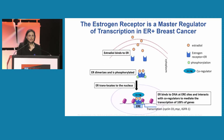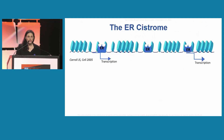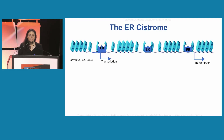When ER is activated, it is translocated to the nucleus where it binds to chromatin and to ERE sites, or estrogen responsive elements, and facilitates the transcription of hundreds of genes. However, when we look at this cartoon, we actually do not see the full picture. If we zoom out, we recognize that ER binds to chromatin in thousands of sites, and it is the genome-wide binding sites of ER that make up the ER cistrome.